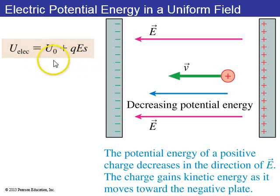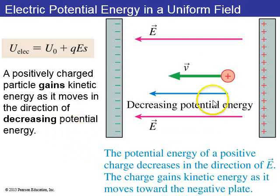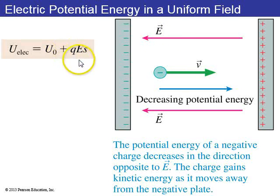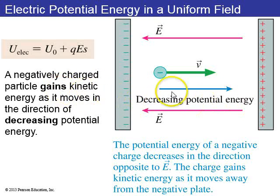The potential energy of the positive charge decreases as it moves in the direction of the electric field, and it gains kinetic energy as it moves toward the negative plate. Particles naturally move in the direction of decreasing potential energy. For a negative particle, the electric force is opposite to E, but using the same equation with q negative, the potential energy of the negative charge decreases as s increases, and it gains kinetic energy moving away from the negative plate — again moving toward decreasing potential energy.